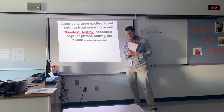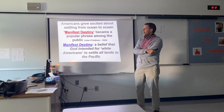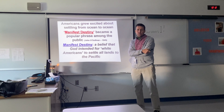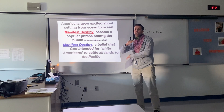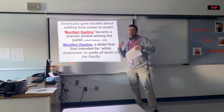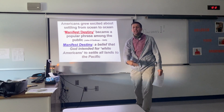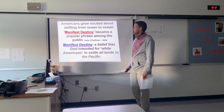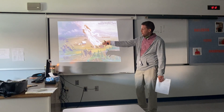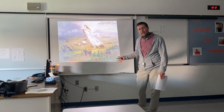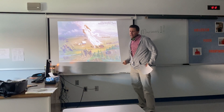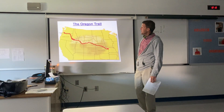Manifest Destiny is the belief that God wants Americans to settle this land from coast to coast. Religion was very important in the early 1800s, and this mindset — that God wants us to do it — was only added incentive to keep pushing west toward California, Oregon, and Washington. Images of the time showed people being protected by angels as they pushed forward. It was a very intense period.